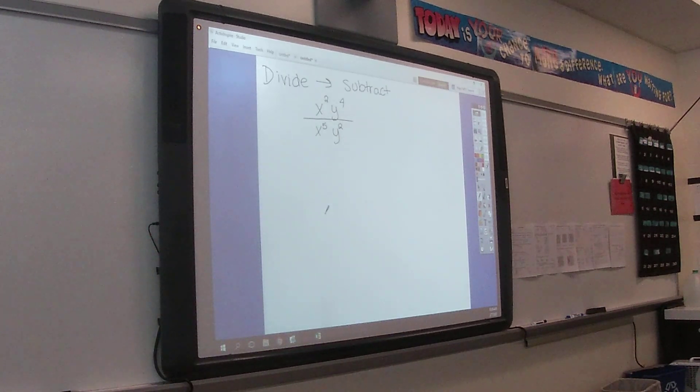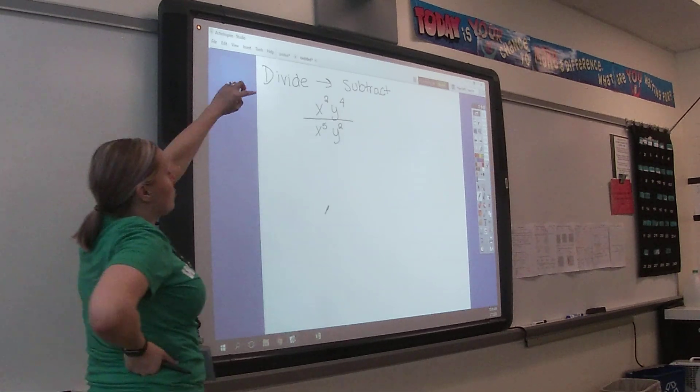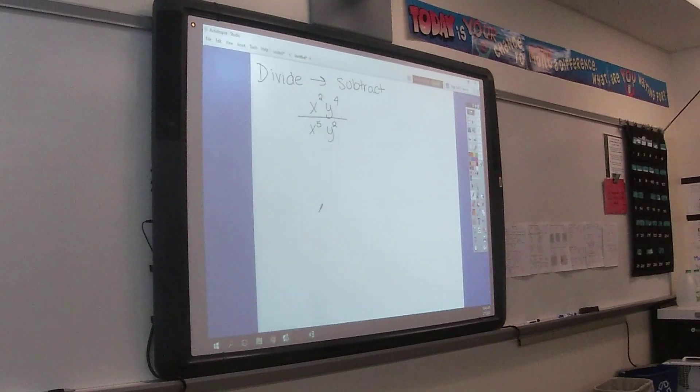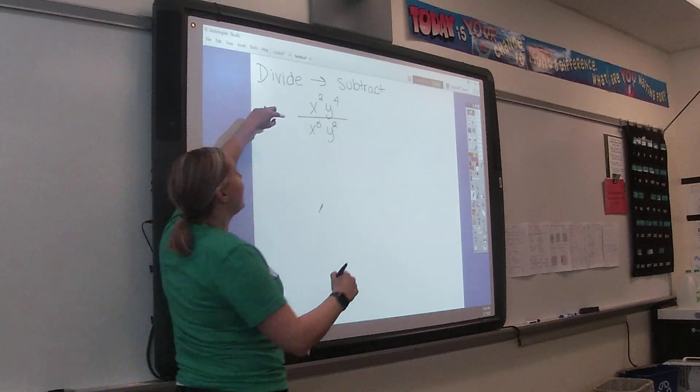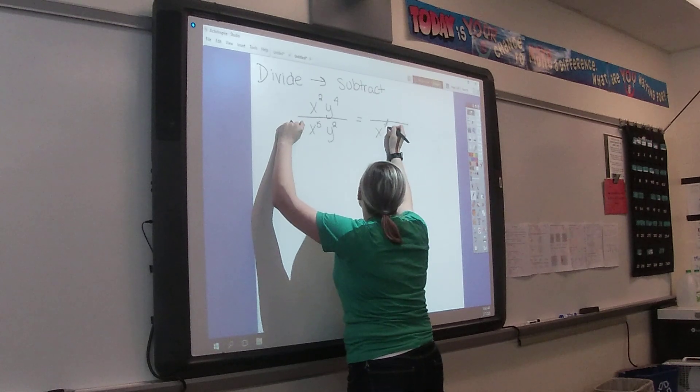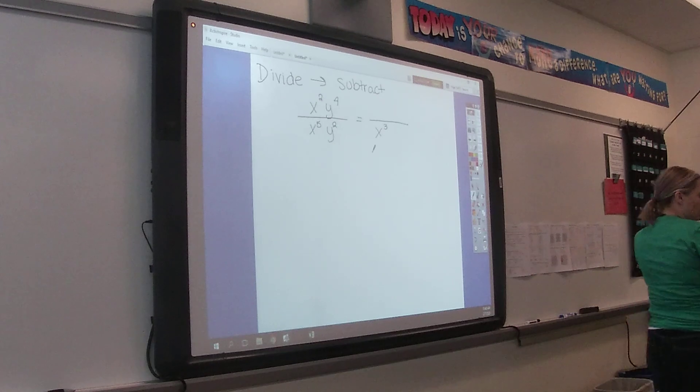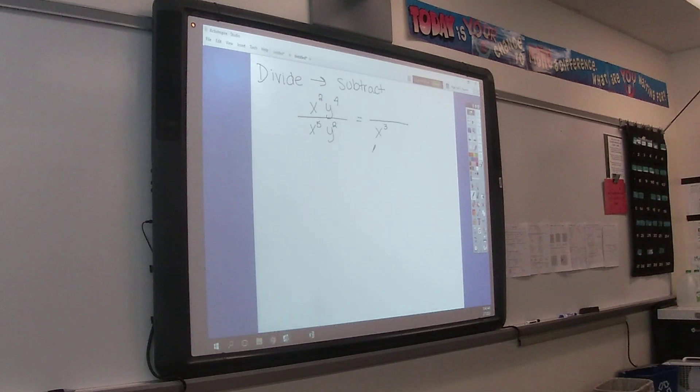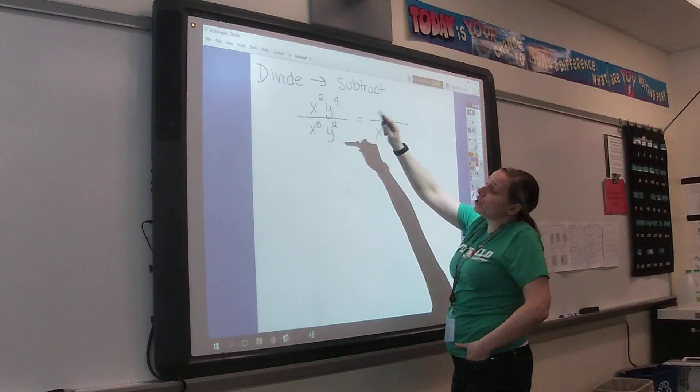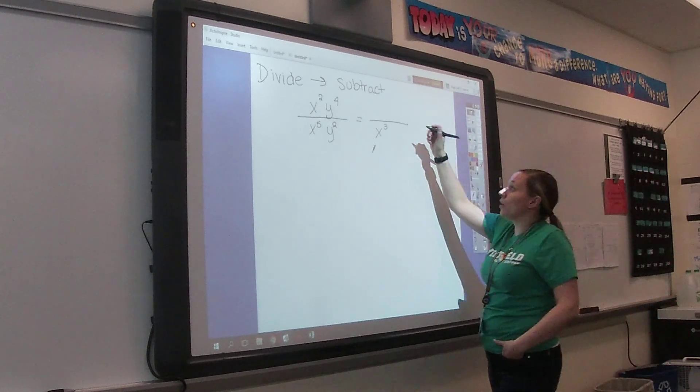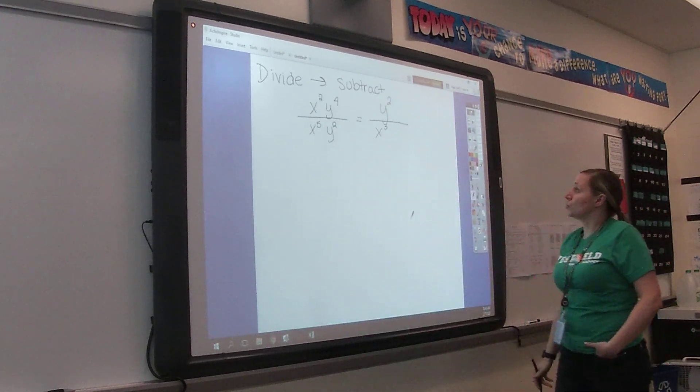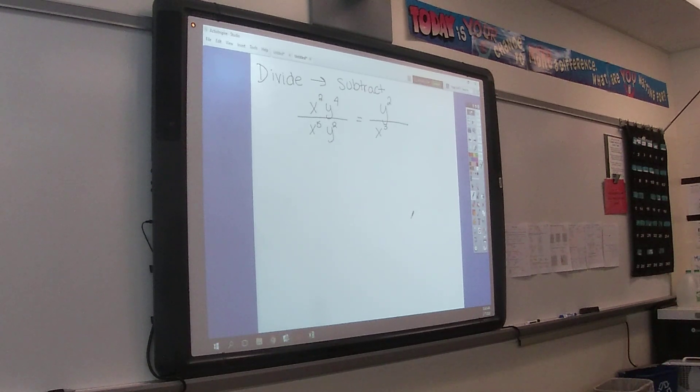X squared Y to the fourth over X to the fifth Y squared. So if we subtract here, 2 minus 5 is negative 3. Negative goes on the bottom. So maybe you need to make a note. When we subtract if you get a negative, write on the bottom. And then 4 minus 2 is positive 2. So that will go on the top. We'll get Y squared over X to the third.